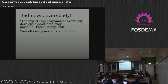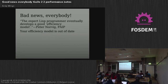Peter Norvig wrote a book a long time ago called Paradigms of Artificial Intelligence Programming, which is not great as an AI book, but it has really interesting LISP optimization notes. One of his points which has stuck with me is that the expert LISP programmer eventually develops a good efficiency model — a model of what their code is doing — and we need to update ours.